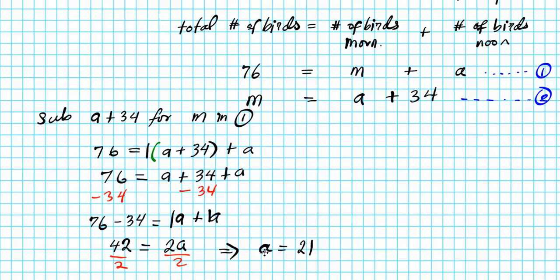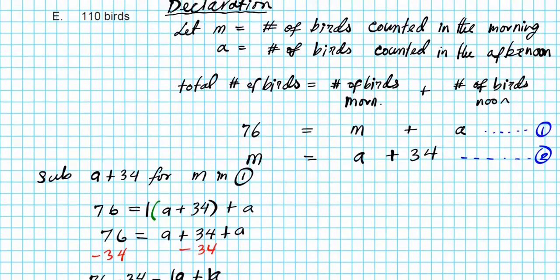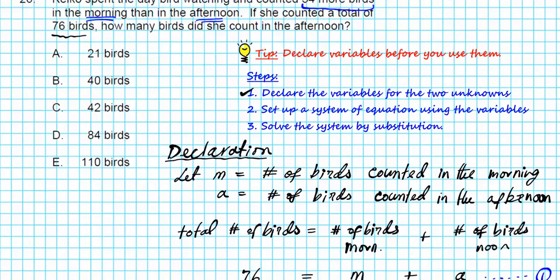What does this mean? A is the number of birds in the afternoon. What was the question asking for? How many birds were there in the afternoon? So number of birds in the afternoon is 21. Our answer is option letter A.